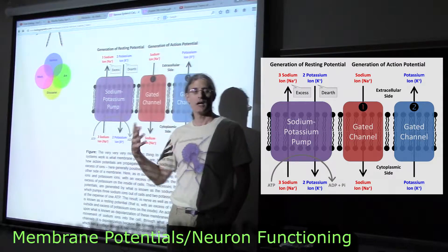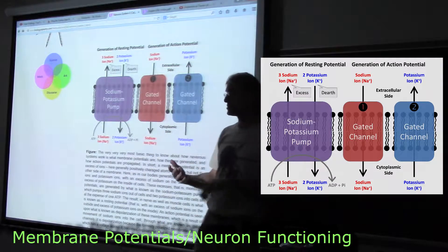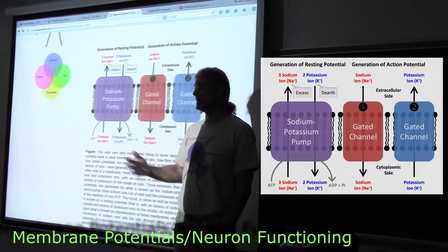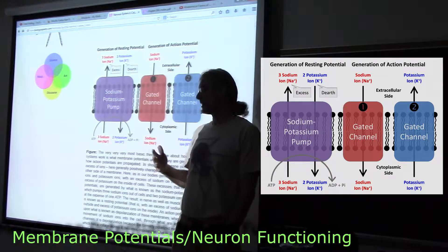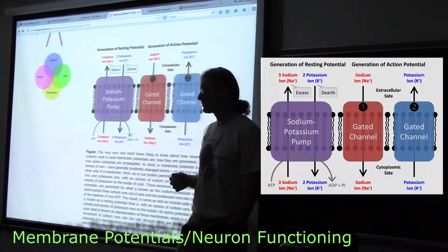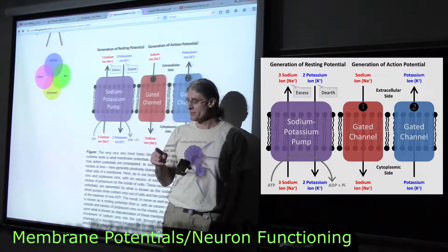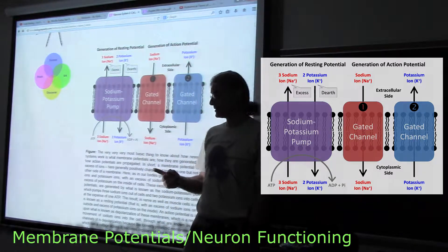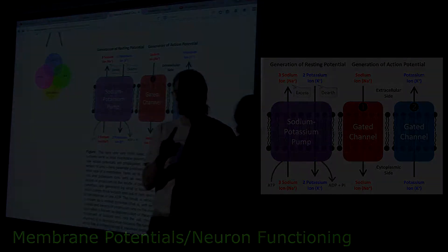One important way we act on decisions is by stimulating our muscles in order to do things — in order to have behavior. But we can also act on these decisions by modifying our bodies in other ways that allow us to maintain homeostasis. So now we've come full circle back to muscles and back to homeostasis, and that is a good time to call it quits.